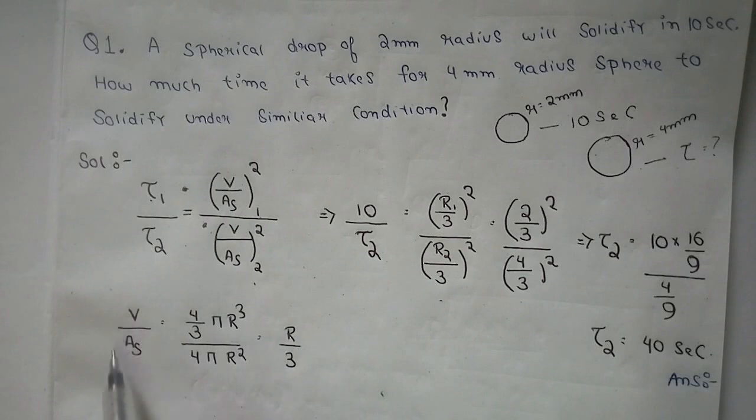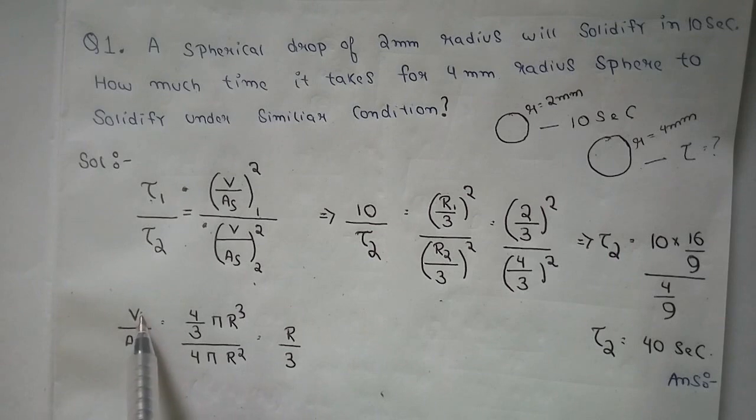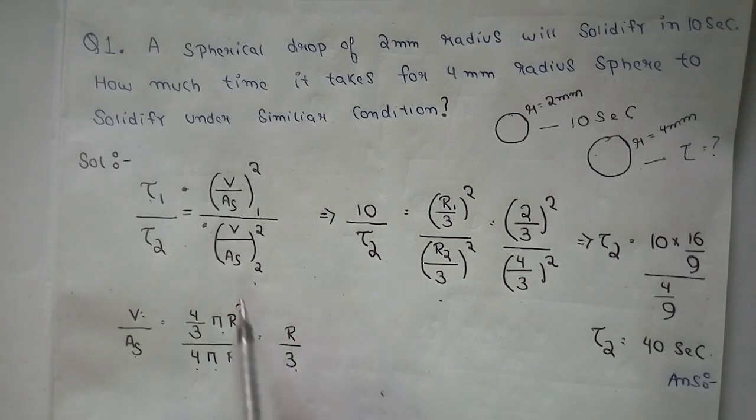We have calculated V/As here. For a sphere, volume is (4/3)πr³ and surface area is 4πr². If we calculate it, we get V/As equals r/3. So we have written (r₁/3)² and (r₂/3)².